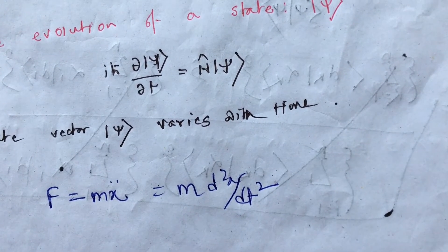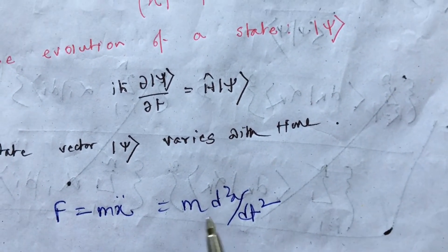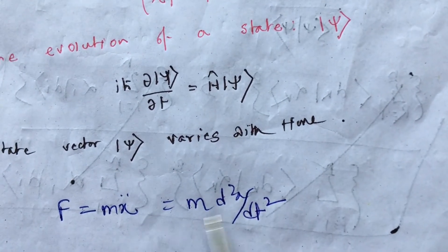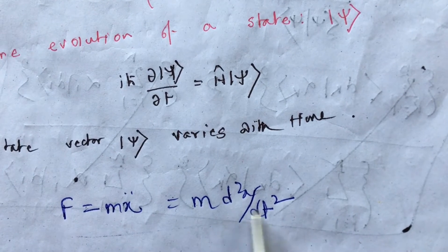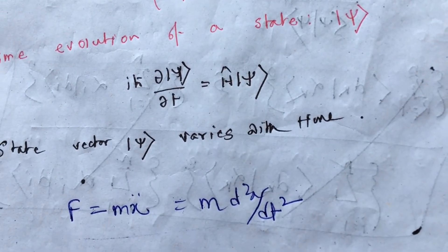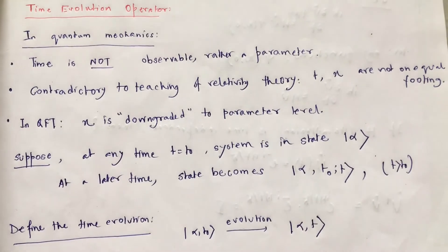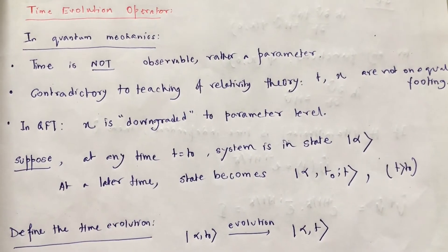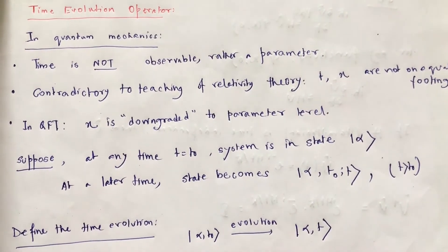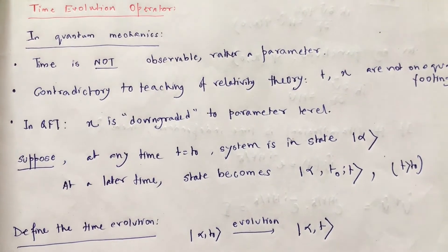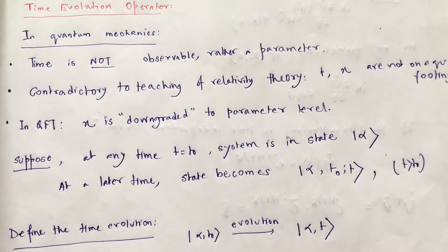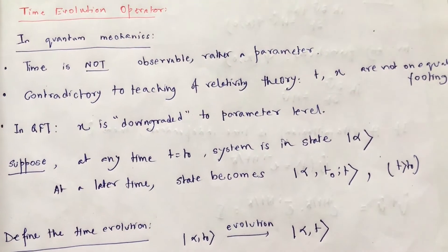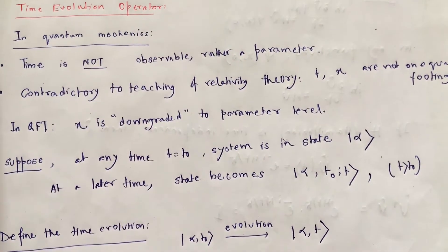So this is similar to classical mechanics. If this is for classical mechanics, this is for quantum mechanics. So as we are interested about how a system changes, how a particle changes its position or momentum with respect to time, which means how it evolves in time, we are going to define a time evolution operator.